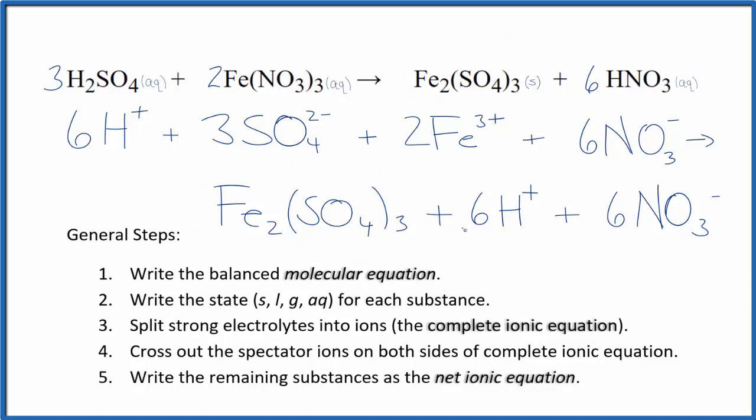Now we can cross out those spectator ions that are on both sides of the complete ionic equation. In the reactants, I can see six hydrogen ions, and in the products I have six hydrogen ions. Those are spectator ions, so we'll cross those out. I see six nitrate ions in the reactants and in the products. These are spectator ions, which we cross out.